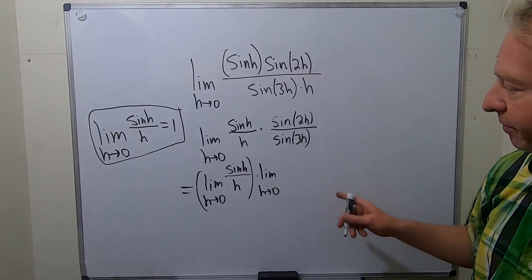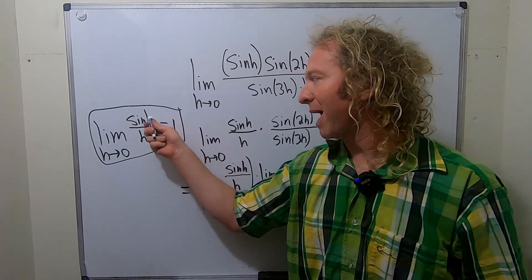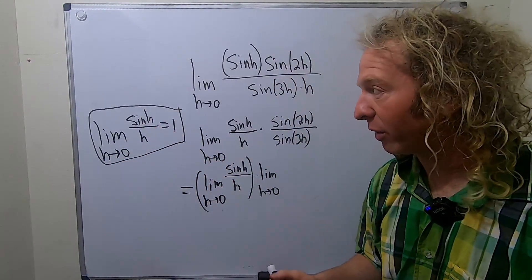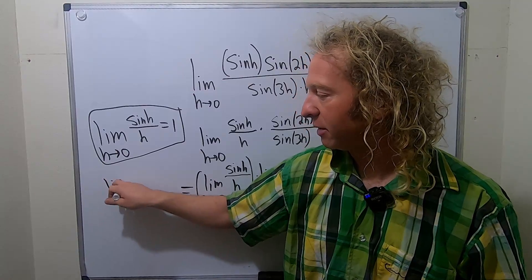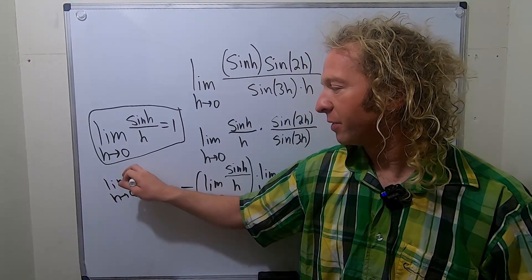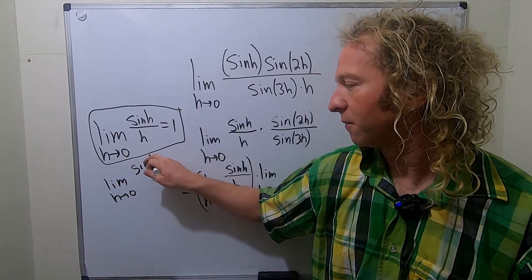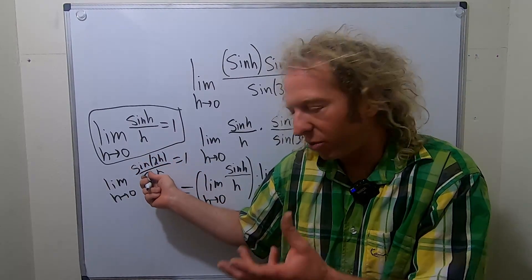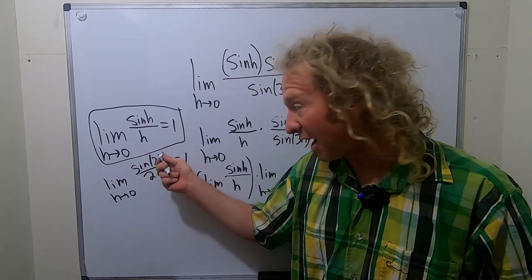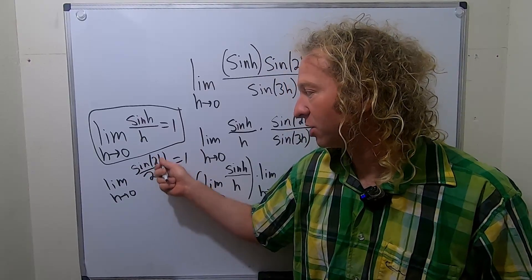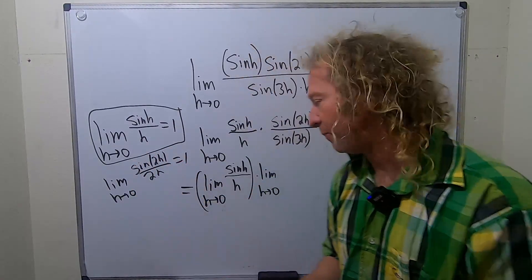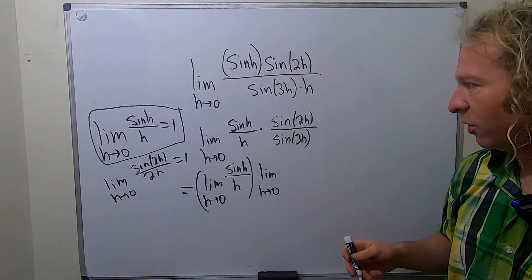So here's the idea. Whenever these match and h is approaching 0, you're going to get 1. So if we had limit h approaches 0, sine 2h over 2h, this is 1. Because both of these approach 0, and they're exactly the same. They have to be the same, though. So 2h over 2h, and this 2h is approaching 0, you're going to get 1. So the idea is here we have sine 2h.